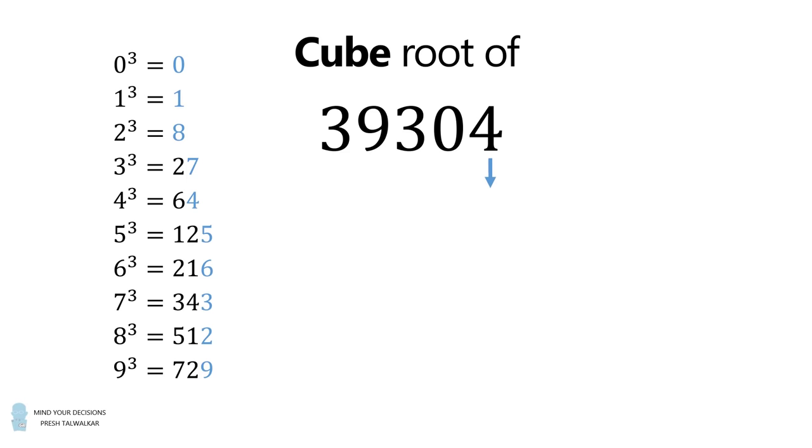So, we look for the cube whose last digit is equal to 4. The only option is 4 cubed, which is equal to 64. So, we put down a 4 here. We then cross out the last three digits. We look for the cube that's closest to 39 without going over. This will be equal to 3 cubed, which is 27. So, we put a 3 here. Thus, the cube root of 39,304 is equal to 34.